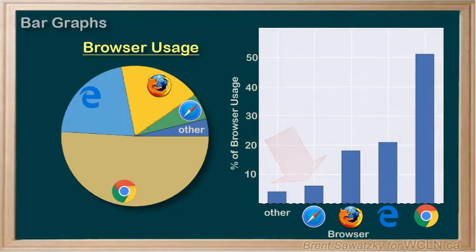So, which is better — a pie chart or a bar graph? Well, it really depends on what your goal is. For a quick and easy comparison, the pie chart is great. For comparisons with a bit more detail being shown, allowing a variety of comparisons, a bar graph is usually a better choice.